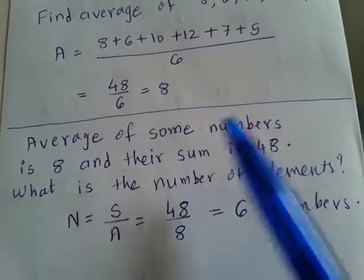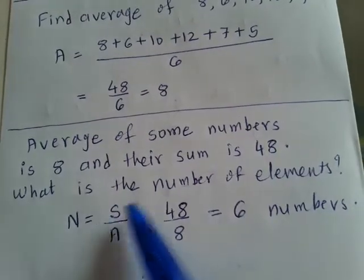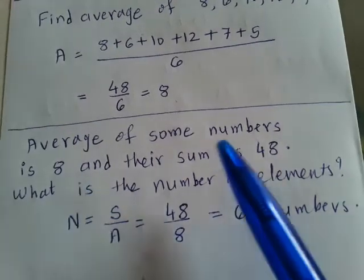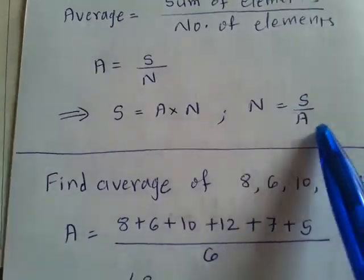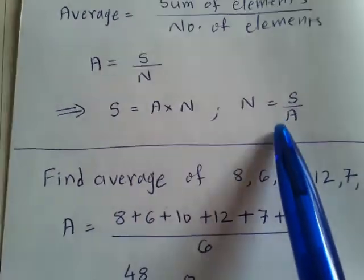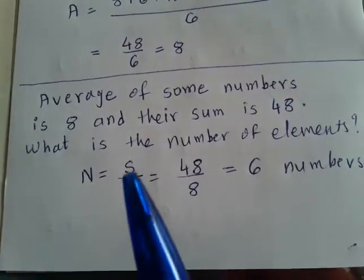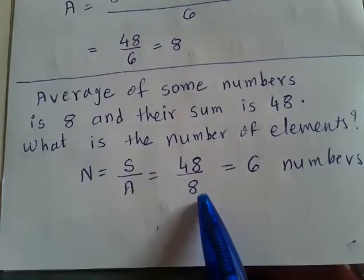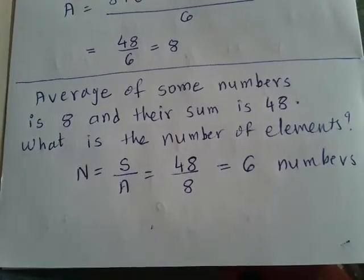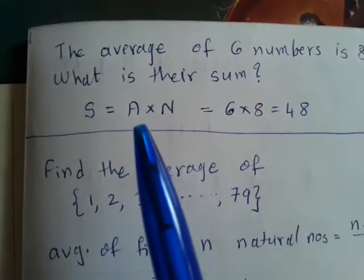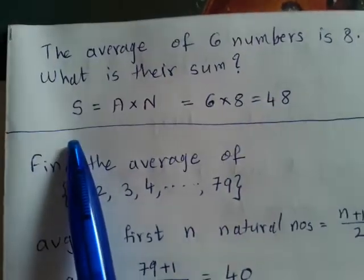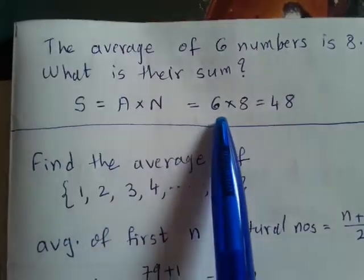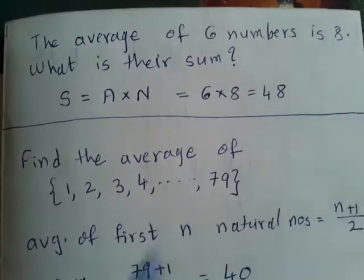The same question can also be asked in this manner: the average of some numbers is 8 and their sum is 48 — what is the number of elements? Here we are given average and sum and need to find number of elements. Number of elements is Sum upon Average. N equals S upon A, so 48 upon 8 gives us 6 numbers. Or it can be asked: the average of 6 numbers is 8 — what is their sum? Sum equals Average into Number of elements, so 6 into 8 equals 48.